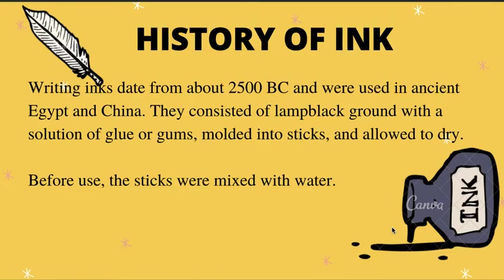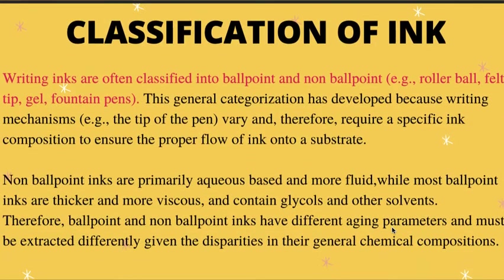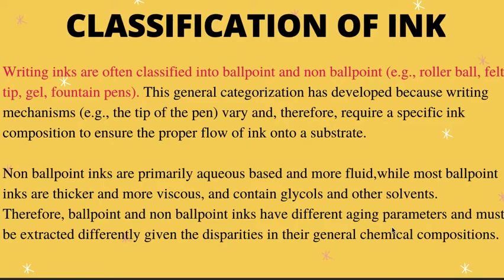If we are going to study about ink, then we need to have knowledge about the history of ink. Ink basically started in ancient Egypt and China during 2500 BC — before Christ. It consisted of lamp black ground with a solution of glue or gum, molded into sticks, dried, and then those sticks were mixed with water — that's how ink was made.